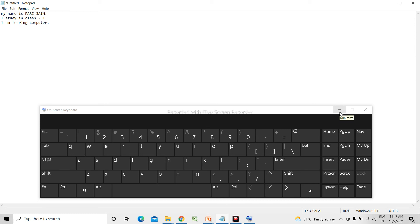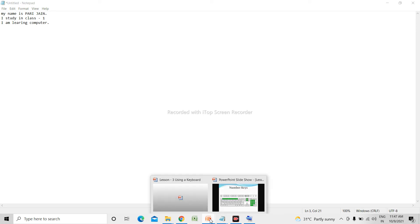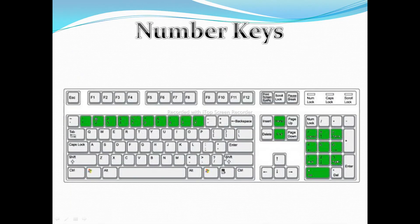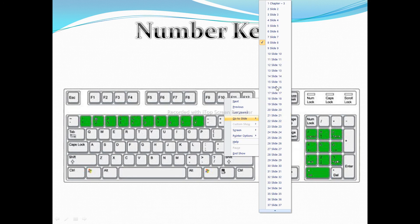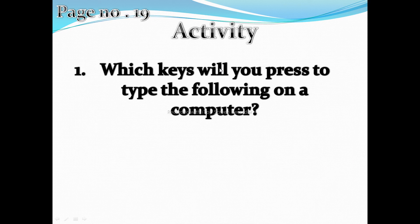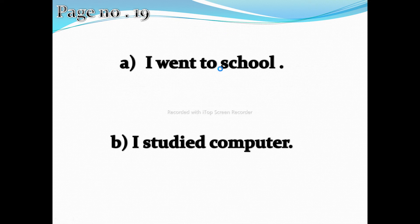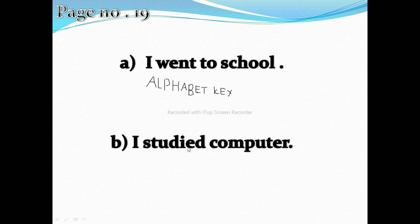Now we will do one more exercise from page number 19: 'Which keys will you press to type the following on a computer?' Some sentences are given in your book on page 19. You have to identify which keys you will use to type those. For example, 'I went to school' — these are all combinations of alphabet keys and spacebar key. Similarly, 'I studied computer' — alphabet key and spacebar key.